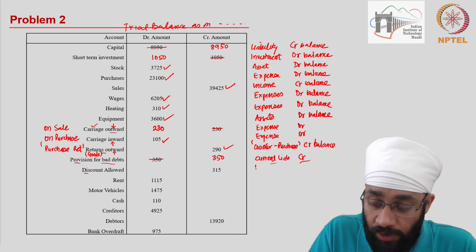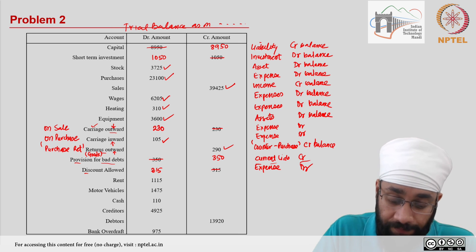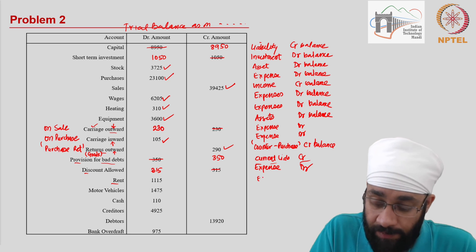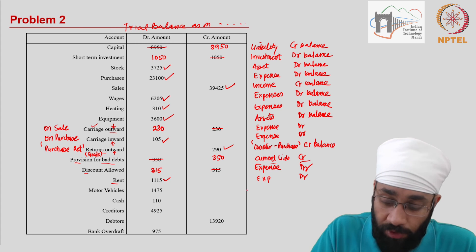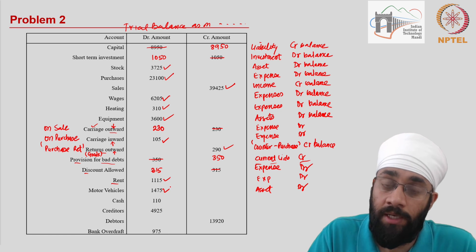Then you have discount allowed, which is an expense of the business. All expenses have debit balance, so you are going to move this to the debit side. Then you have rent. Rent is an expense and hence debit. It is shown correctly. Motor vehicles—this is an asset, debit, shown correctly. We have cash account. Cash is an asset, debit balance. It is also shown correctly.